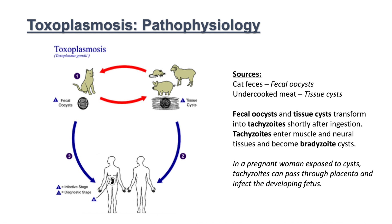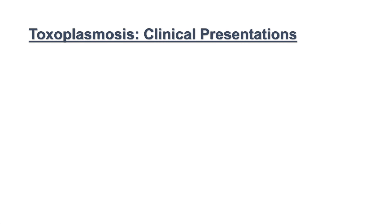What is most concerning is that in a pregnant woman who is exposed to cysts, these tachyzoites can pass through the placenta and infect the developing fetus, leading to what we call congenital toxoplasmosis. So what is the clinical presentation of toxoplasmosis? We're going to first talk about congenital toxoplasmosis.